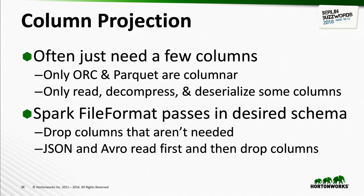The next use case is column projection. Often when running a query you only need a few columns out of hundreds. This is where columnar formats really change things — you can read and decompress only the bytes needed for those columns. Spark's file format interface makes it easy by letting you pass in your desired schema. JSON and Avro read everything first and then drop columns; ORC and Parquet don't bother reading data they don't need.